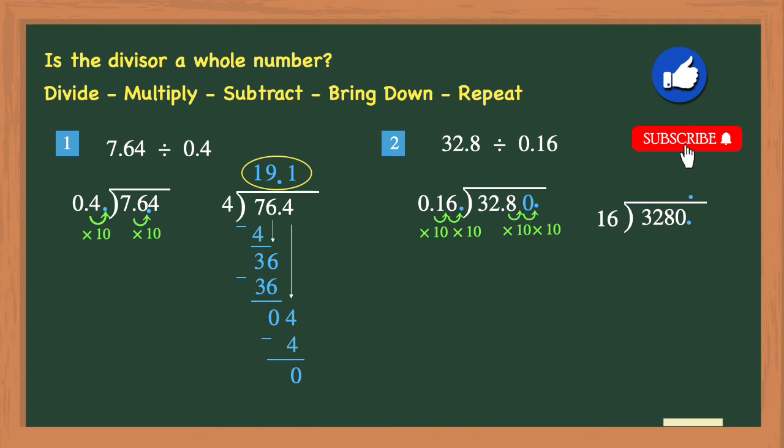So 16 goes into 32 two times. 2 times 16 is 32. 32 minus 32 is 0. Now here again, you need to be careful because even though you have a zero remainder, you still have digits left in the dividend to bring down. So you'll bring down the 8.